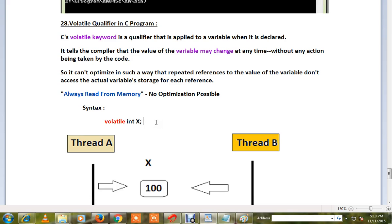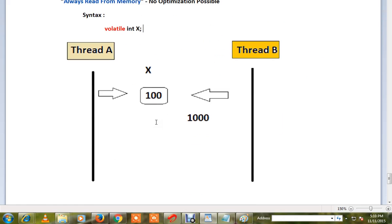So the compiler can't optimize in such a way that repeated references to the value of the variable don't access the actual variable storage for each reference. For example, inside this thread there is a variable called